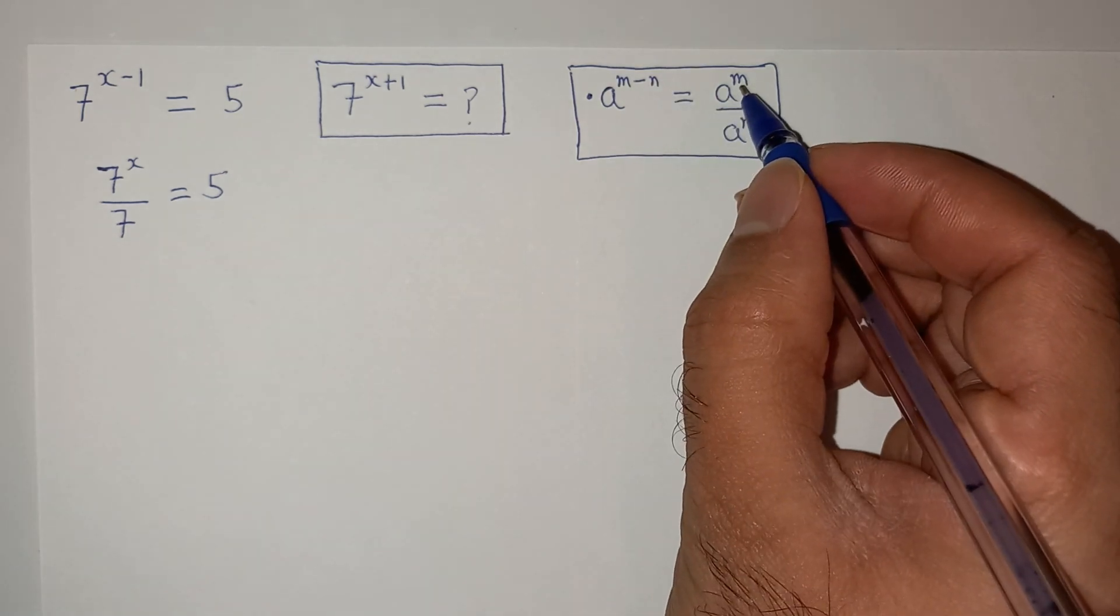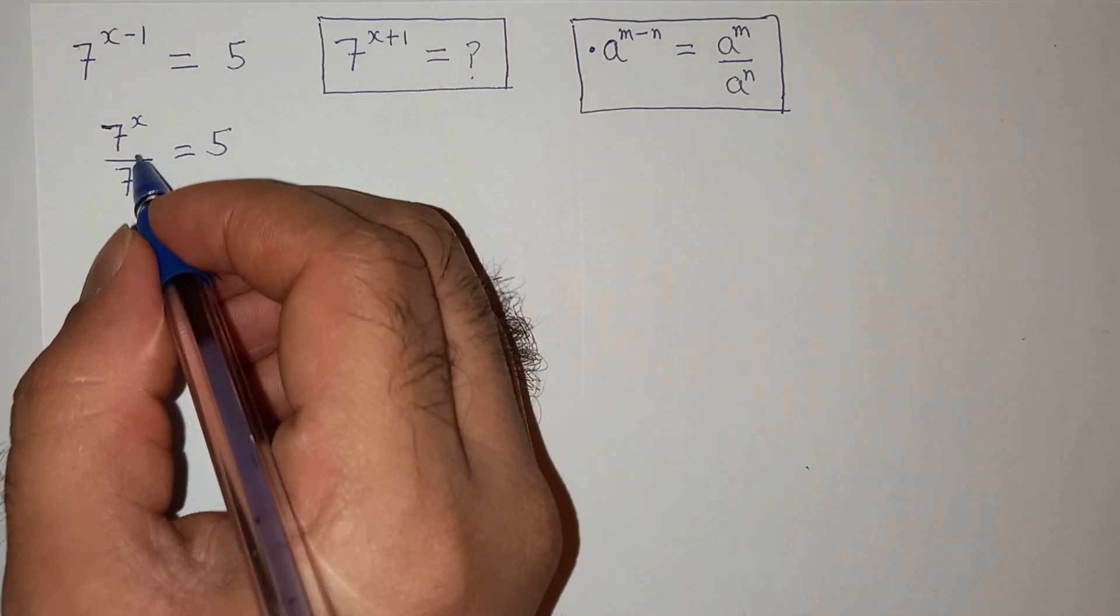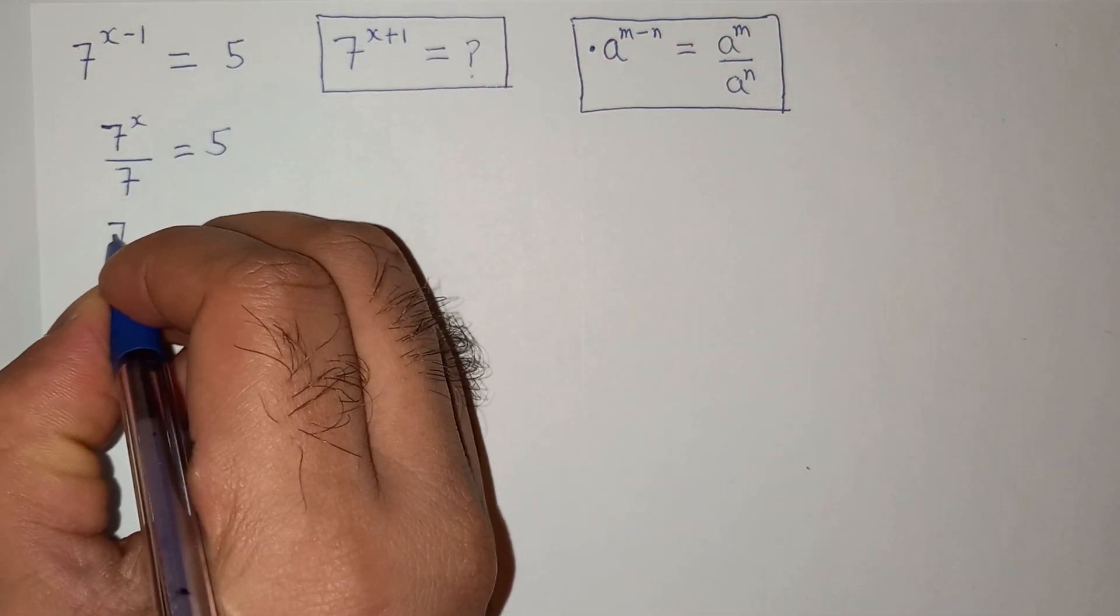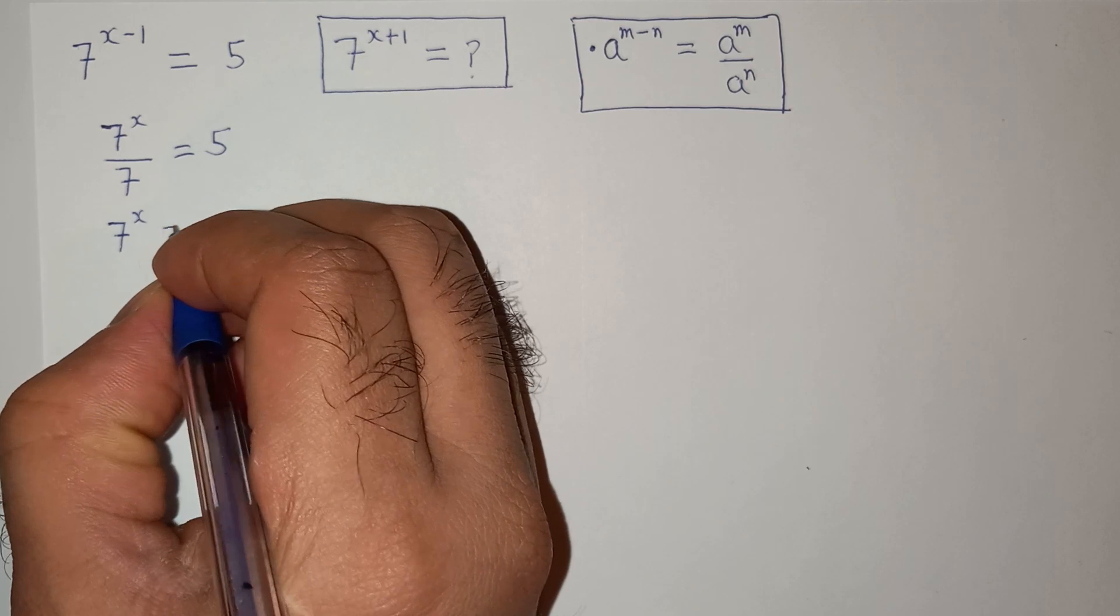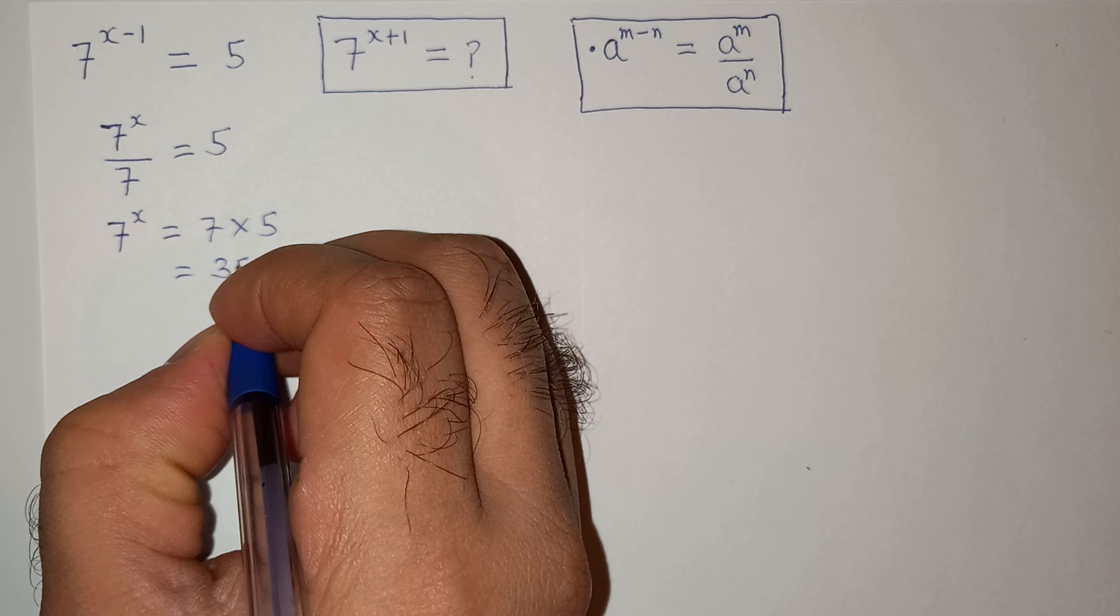So from this we will get 7 power x equals to 7 multiplied by 5 equals to 35.